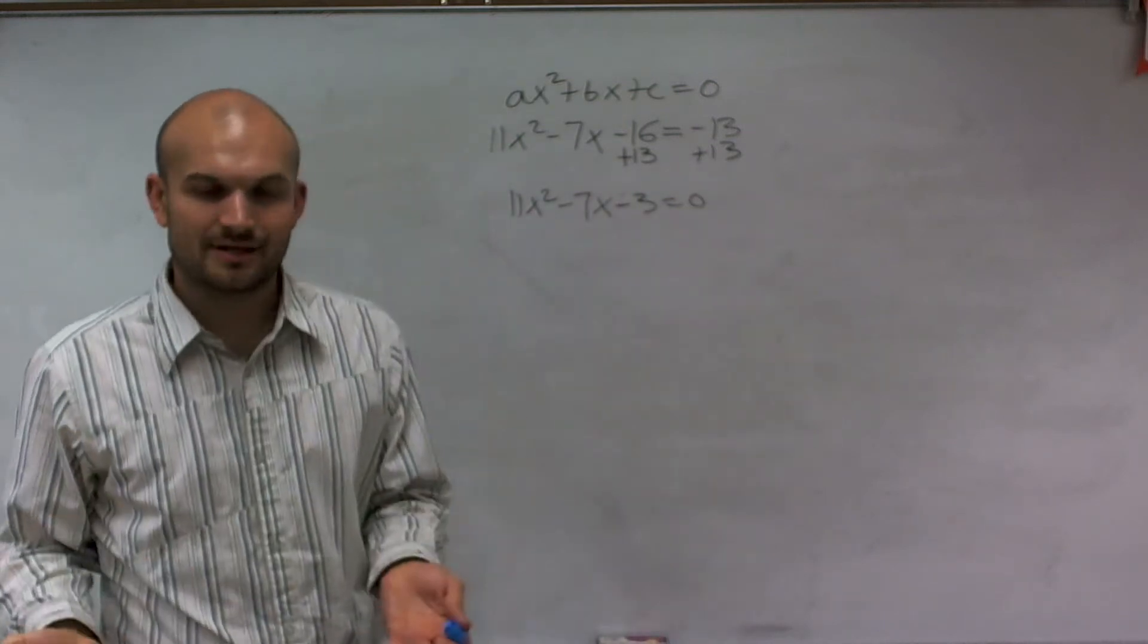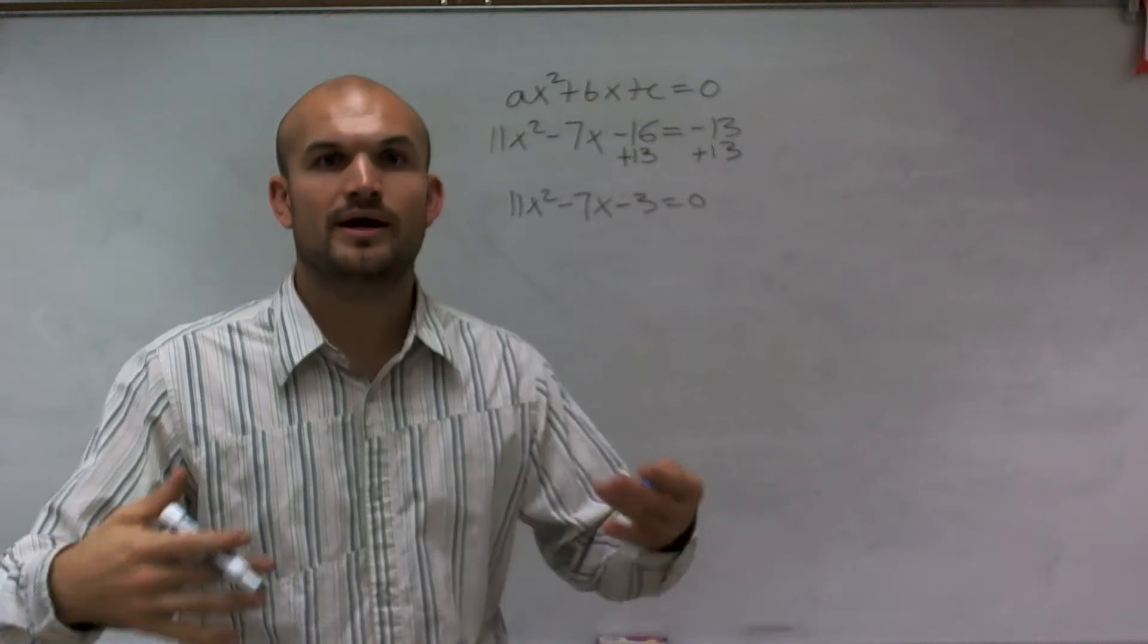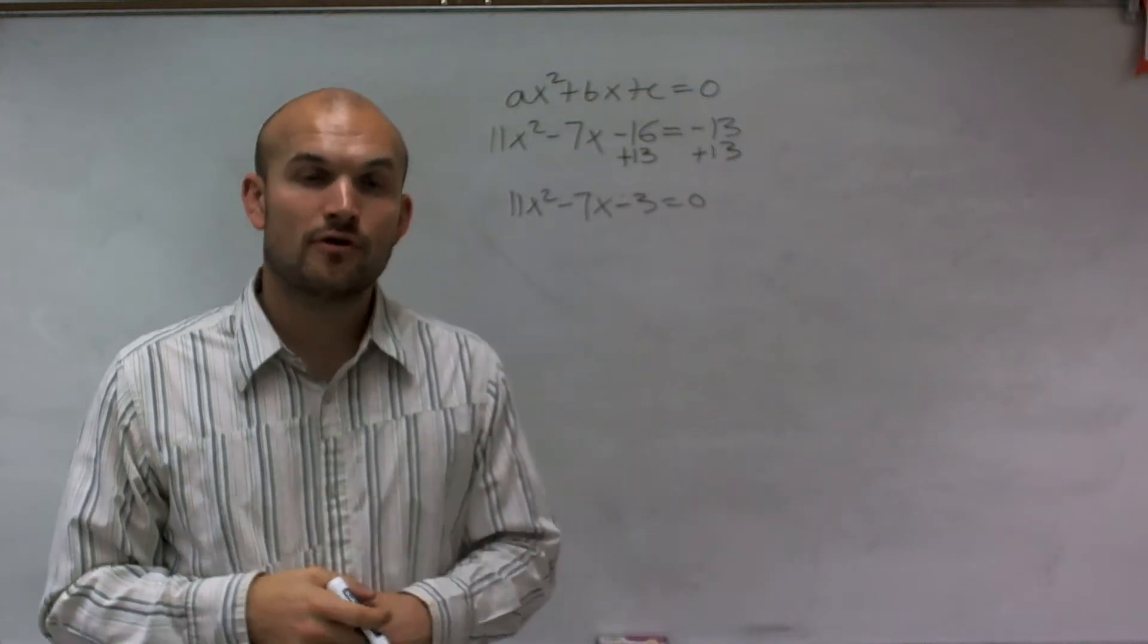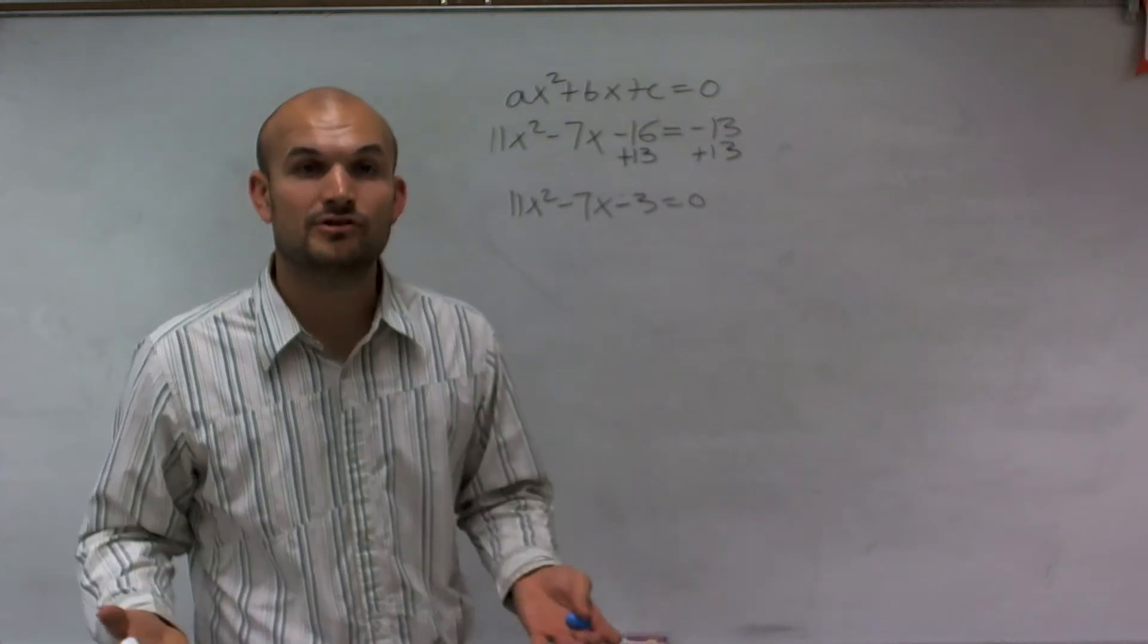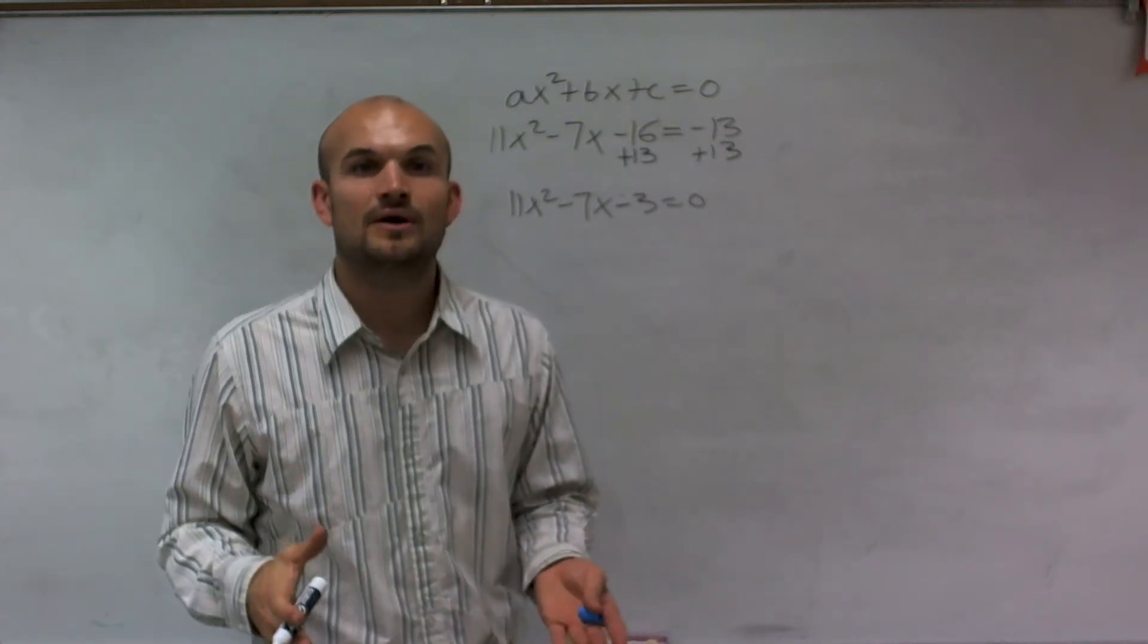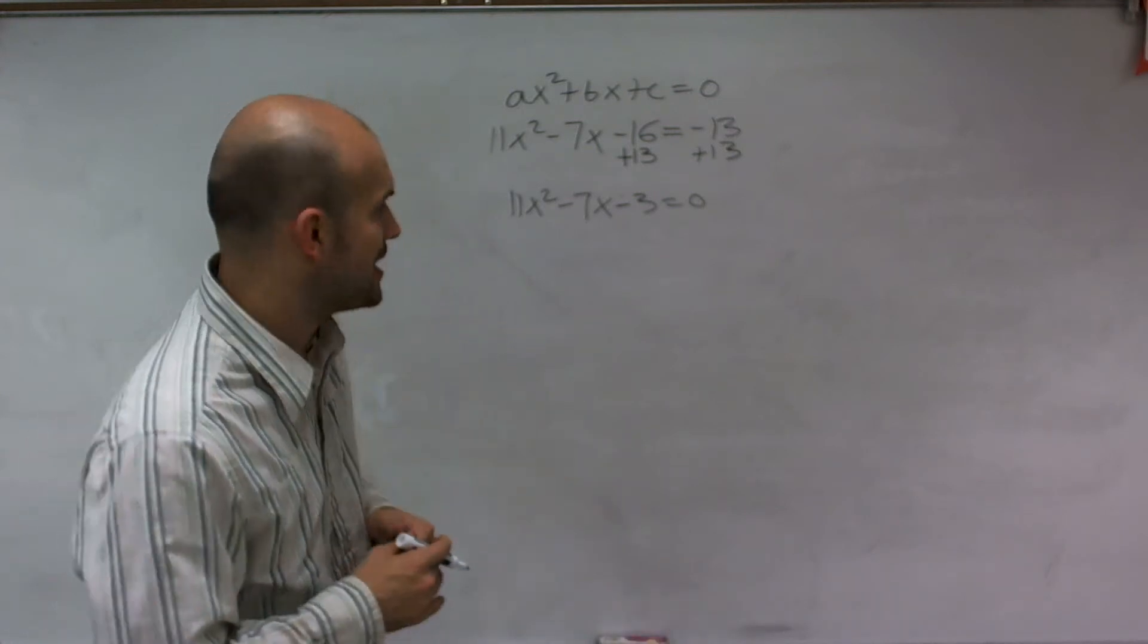So now I have a quadratic set equal to 0. And that tells me to find the solution, I could factor it, complete the square. In this case, we're going to use the quadratic formula. But before we even go through doing all the quadratic formula, we're going to use the discriminant. And the discriminant is going to be the value of what number we're going to take the square root of. And that's going to tell us a lot about our solutions in our problem.